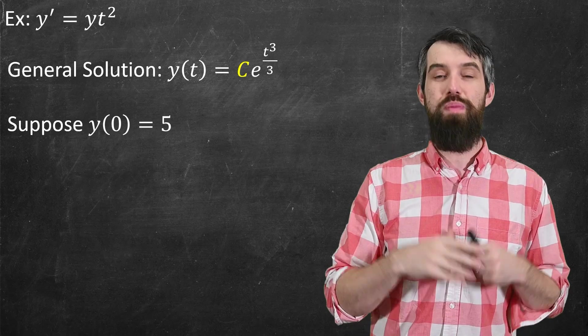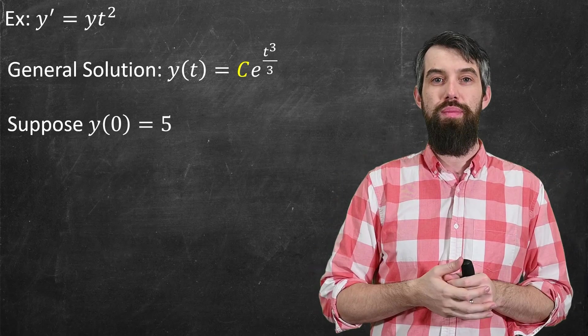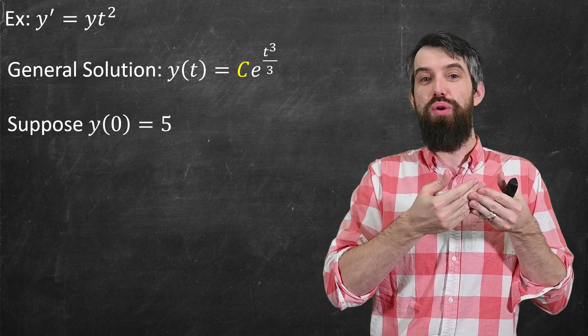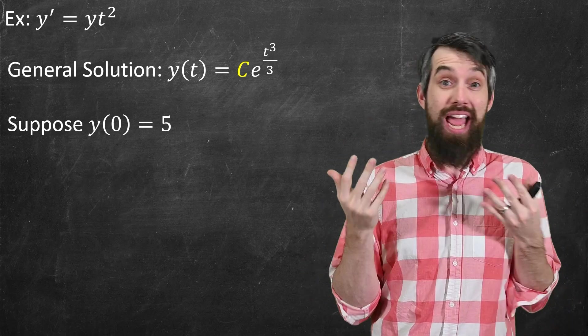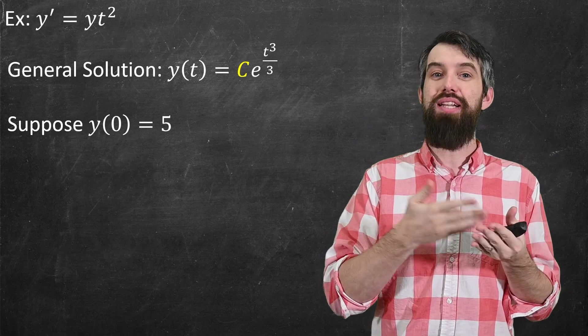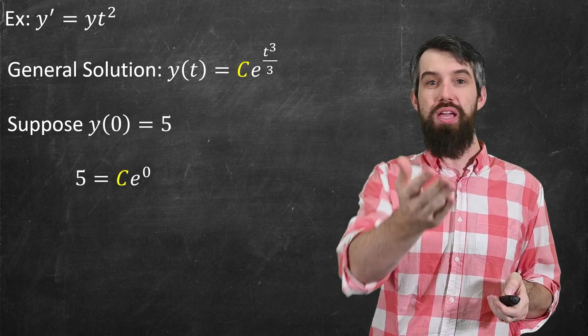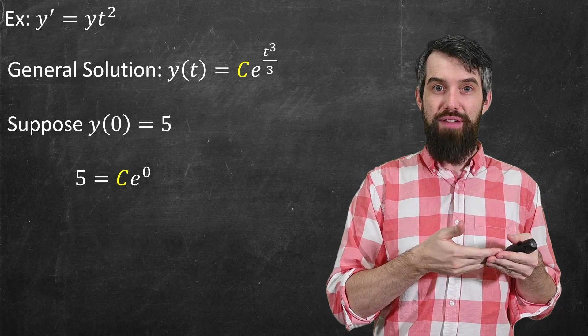Now I really want to focus on that c value. So I want to give an extra piece of information. Suppose I told you that at time t equal to 0, y was 5, a so-called initial condition. I'm telling you what happens initially at time t equal to 0.